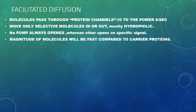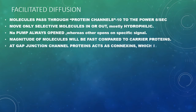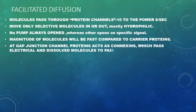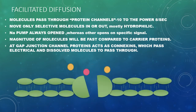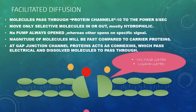Gap junctions occur when two cells attach to one another — at that junction there will be connections made of channel proteins. Through these connections, electrical signals and dissolved molecules pass from one cell to another, allowing cell coordination within an organ. Only dissolved molecules and electrical signals pass through the connections. These channels are either voltage-gated or ligand-gated.